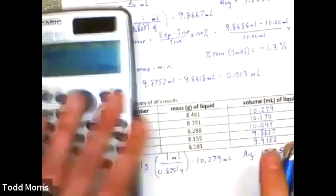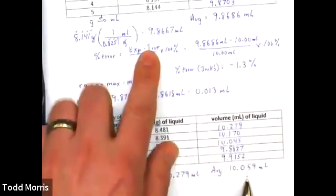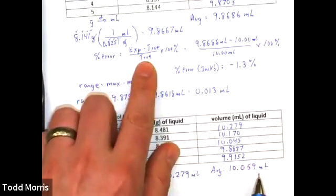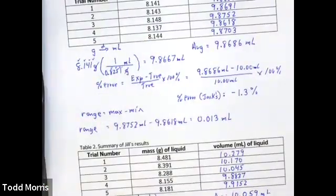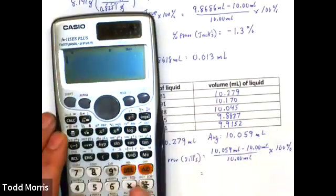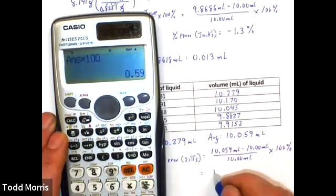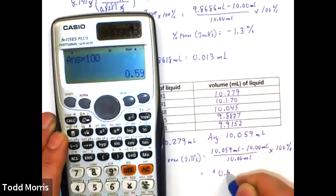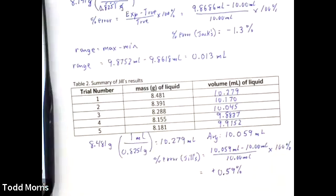That number then is going to be our experimental value, our percent error calculation. So, her percent error was then going to be 10.059 minus 10 divided by 10 times 100. It's a percent error for Jill of only about positive 0.59%. That's going to be an indication of how accurate Jill was.